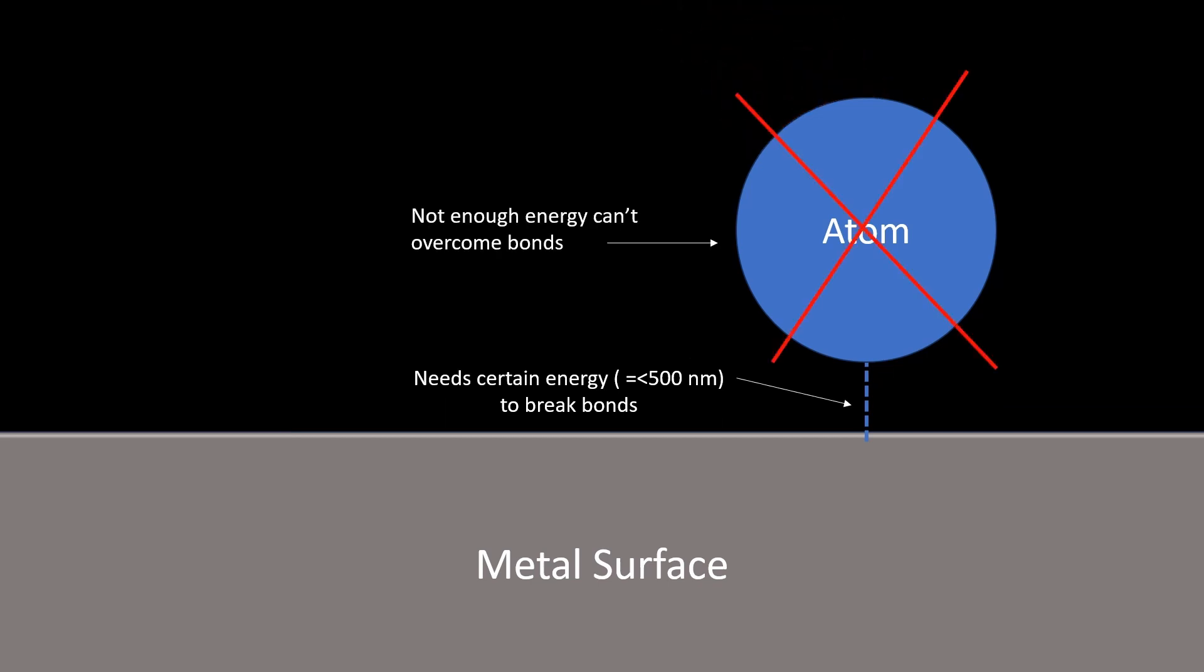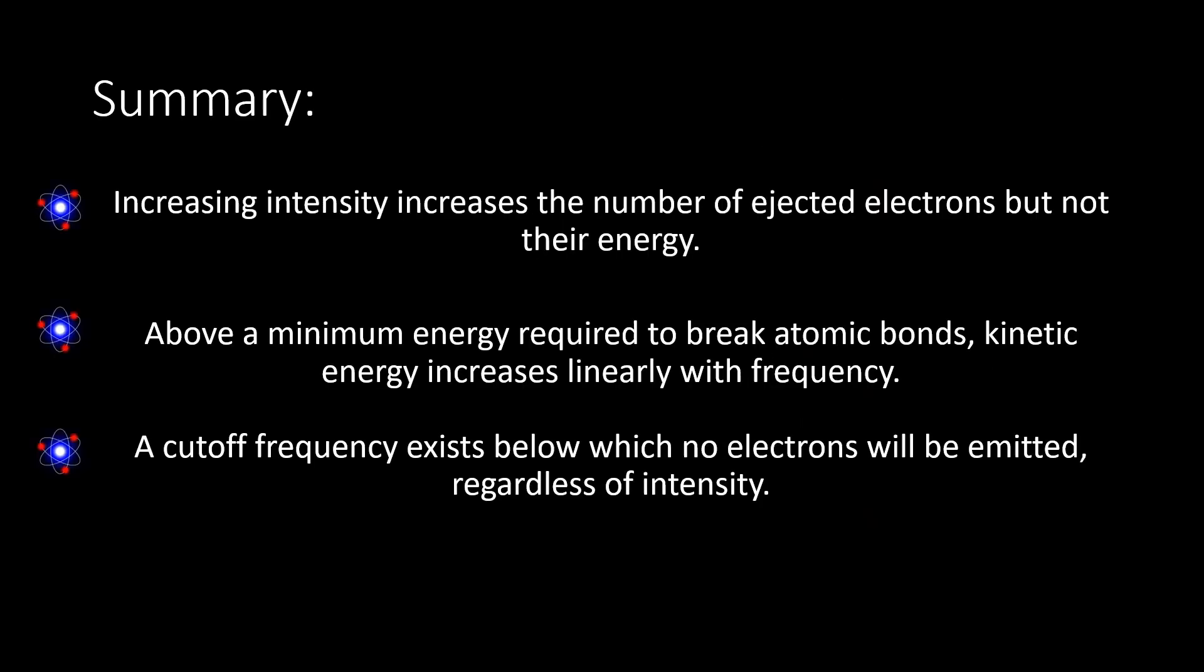So, in summary, if we view light as particles or photons, the theory predicts the following for the photoelectric effect. One, increasing intensity increases the number of ejected electrons, but not their energy. Two, above a minimum energy required to break atomic bonds, kinetic energy increases linearly with frequency. And three, there exists a cutoff frequency below which no electrons will be emitted regardless of intensity. When we plot kinetic energy against frequency, it aligns perfectly with the photon theory.